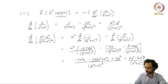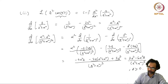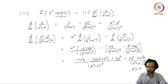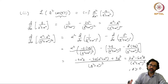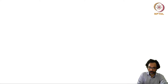This is the final answer, valid for s greater than 0. So we have computed the Laplace transform of t² cos(αt) using the derivative rule. One can do this for higher powers as well, as long as one is willing to compute the derivative up to that order. Now let us come to the next property: division by t.